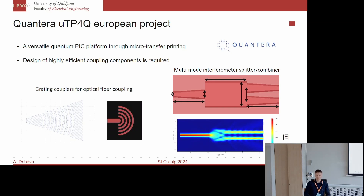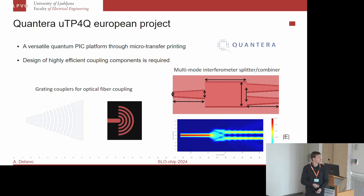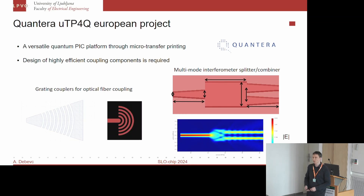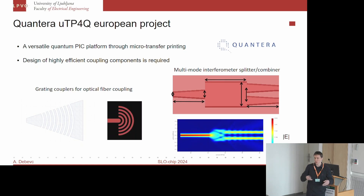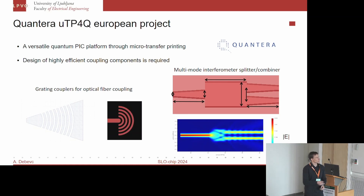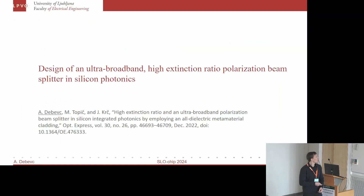Moving on to actual components: one example is the Quantera project for microtransfer printing for quantum applications, introduced this morning. The goal is to design a versatile quantum photonic integrated circuit platform through microtransfer printing, combining different technologies on a single chip. Our role is to design highly efficient components for light coupling. Since we are dealing with single photons, losses must be very low. We are designing grating couplers for fiber connection as well as passive components such as multimode power splitters.